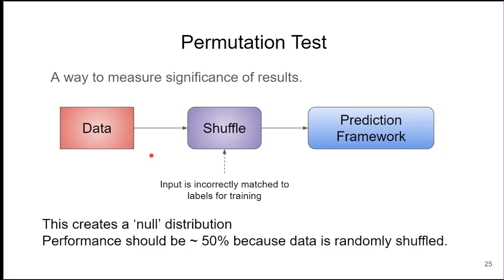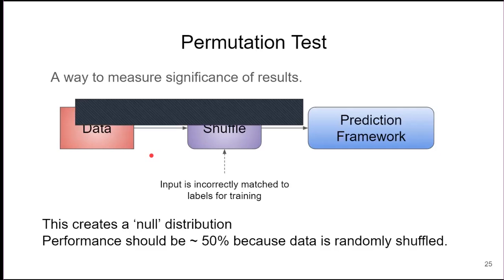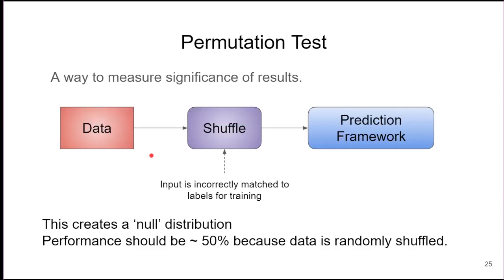A pathological scenario was raised: if almost all data points have the same label, shuffling labels would still often match correctly. The response was that in any machine learning task, we ensure an equal proportion of all labels considered for the experiment — we want an equal distribution of all samples. In any machine learning problem, we don't want a disproportionate ratio, like 70% from one class and 30% from others.